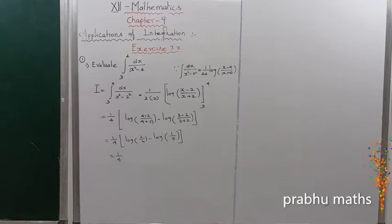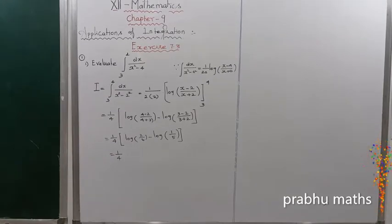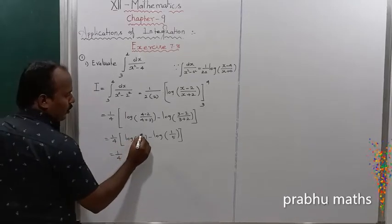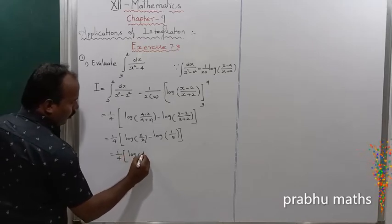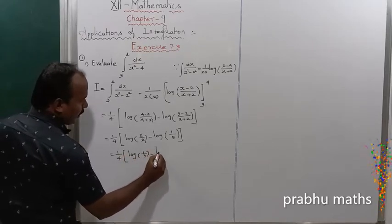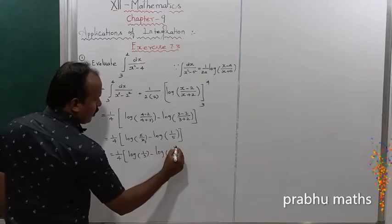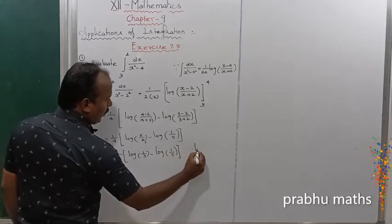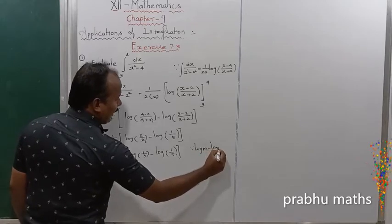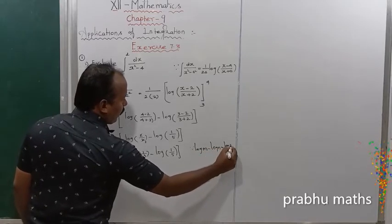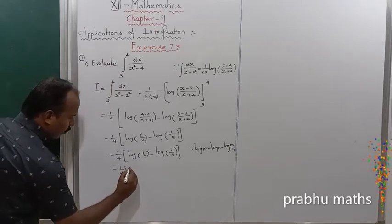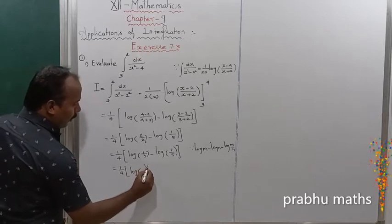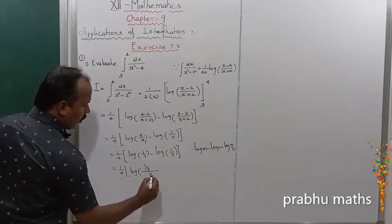That is equal to 1 by 4 into: 2 by 6 simplifies to 1 by 3, so log of 1 by 3 minus log of 1 by 5. Using the logarithmic property log m minus log n equals log of m by n, that is equal to 1 by 4 into log of (1 by 3) divided by (1 by 5).